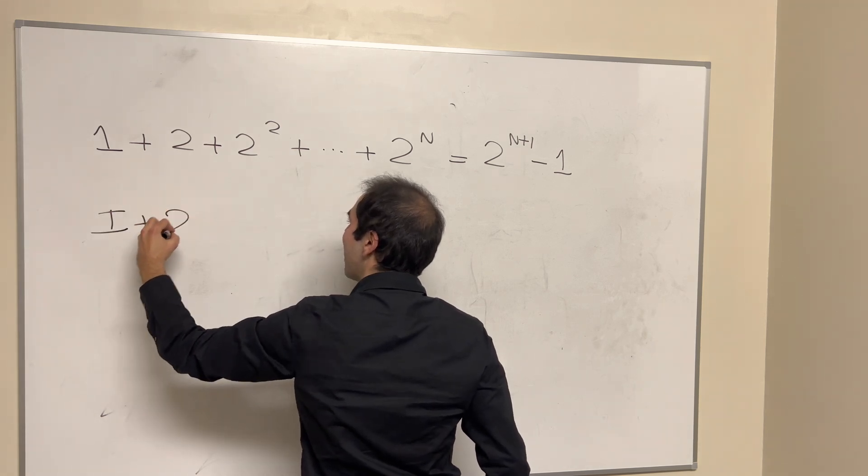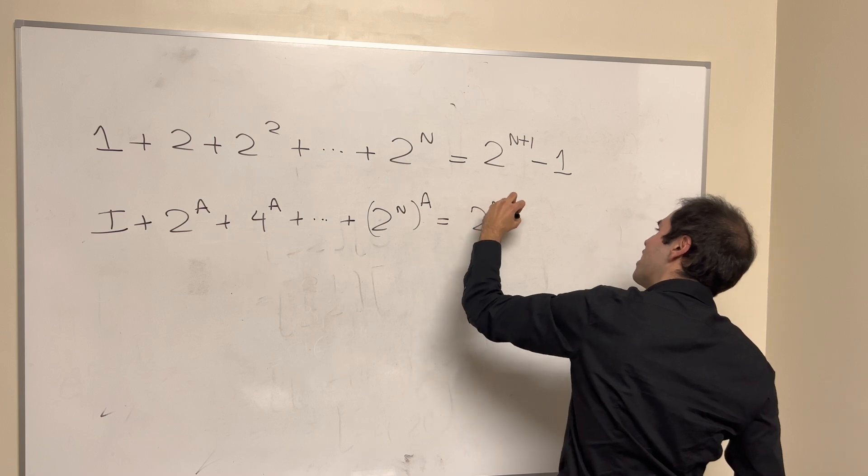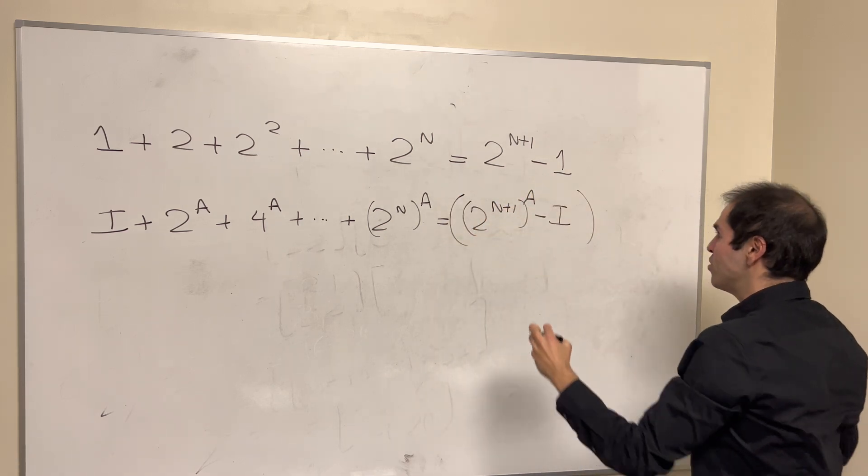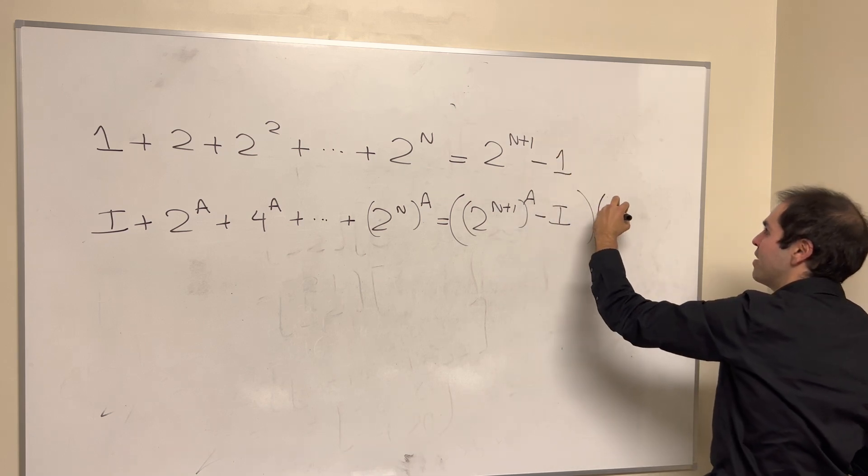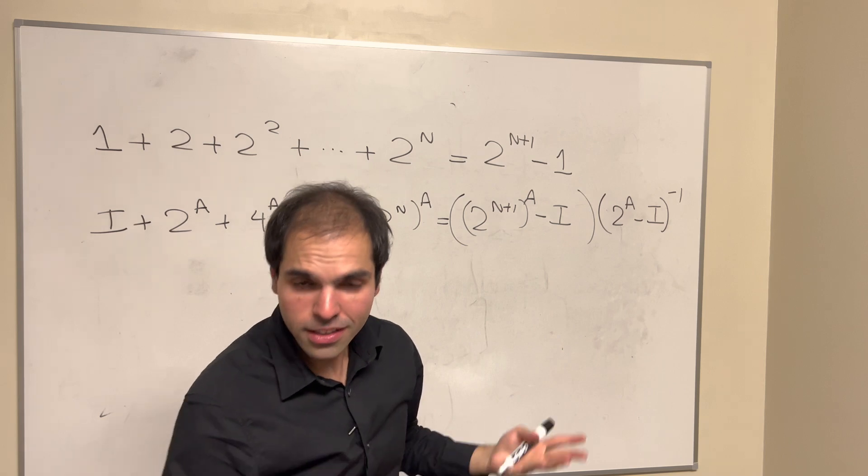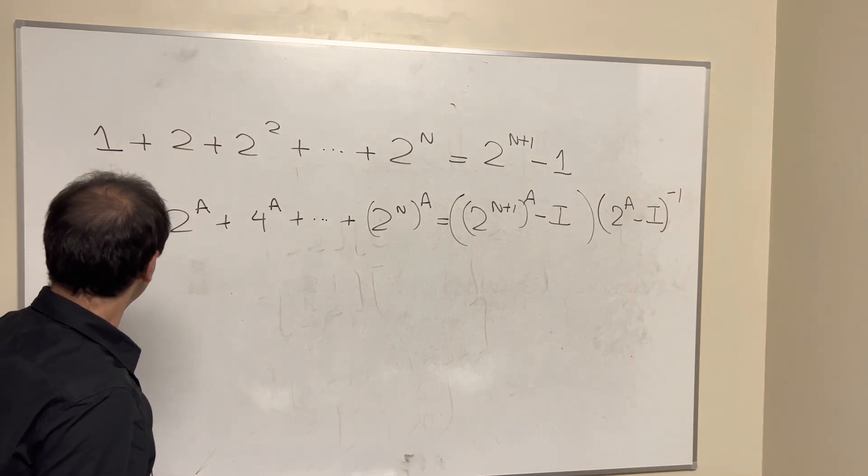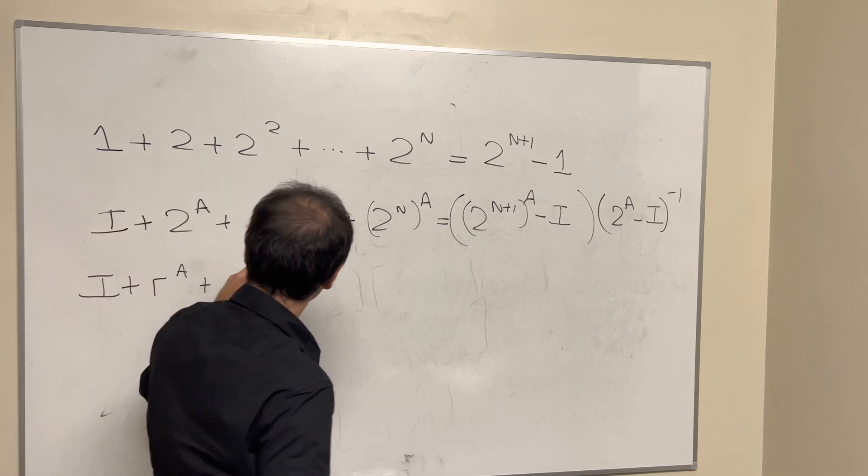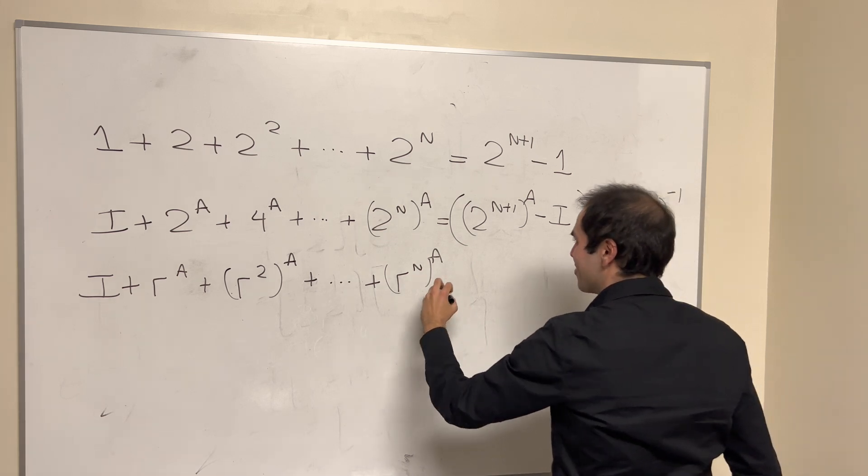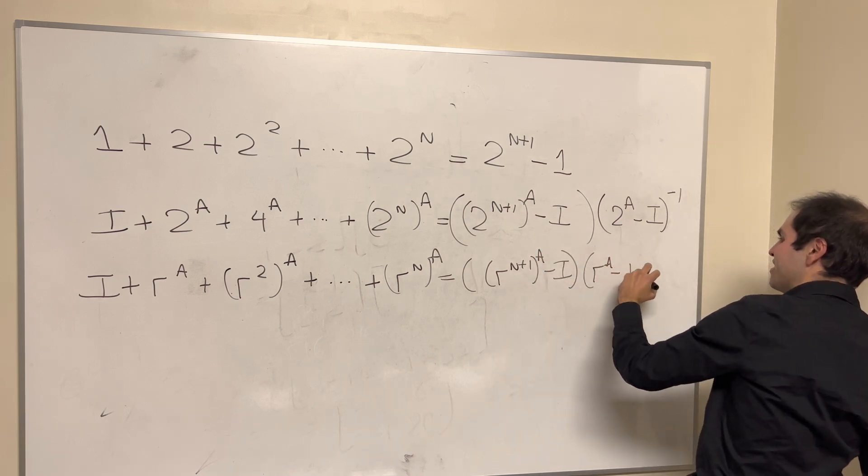and this is the analog I could come up with. So I believe it is true that I plus 2 to the A plus 4 to the A plus dot dot dot plus 2 to the NA equals 2 to the N plus 1A minus the identity. But I believe you do have to divide by, or not divide, but multiply by 2 to the A minus the identity inverse. It doesn't matter from the left or from the right. And in fact, this generalizes not only to 2 to the A, but really R to the A. So 1 plus R to the A plus R squared to the A plus dot dot dot plus Rn to the A. Biology lovers, Rn to the A, and you do get the same formula, R to the N plus 1A minus the identity times R to the A minus the identity inverse.